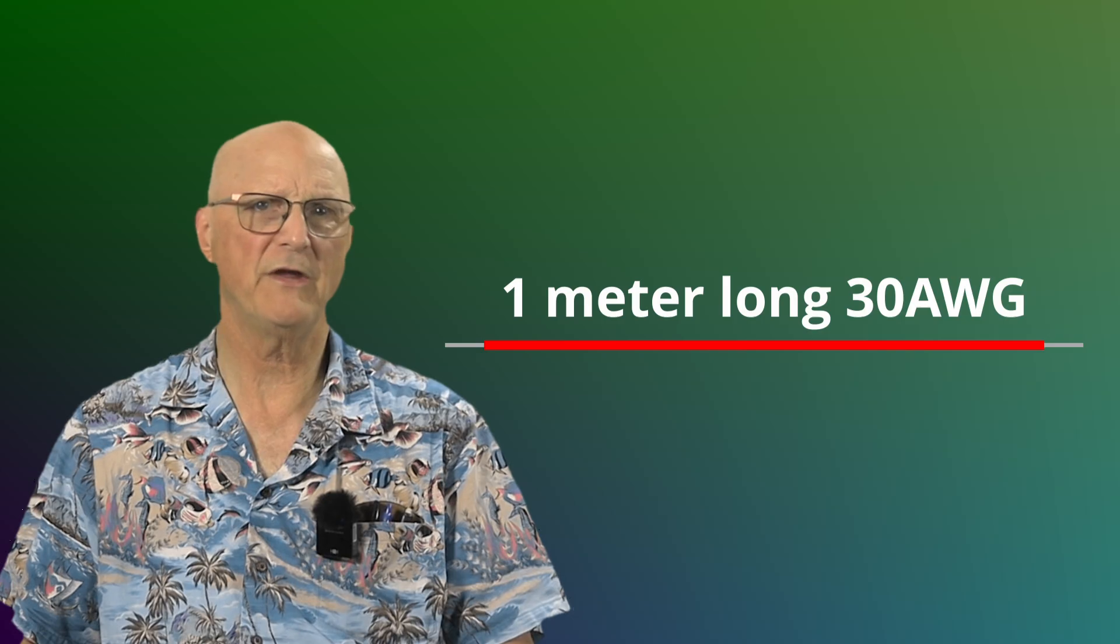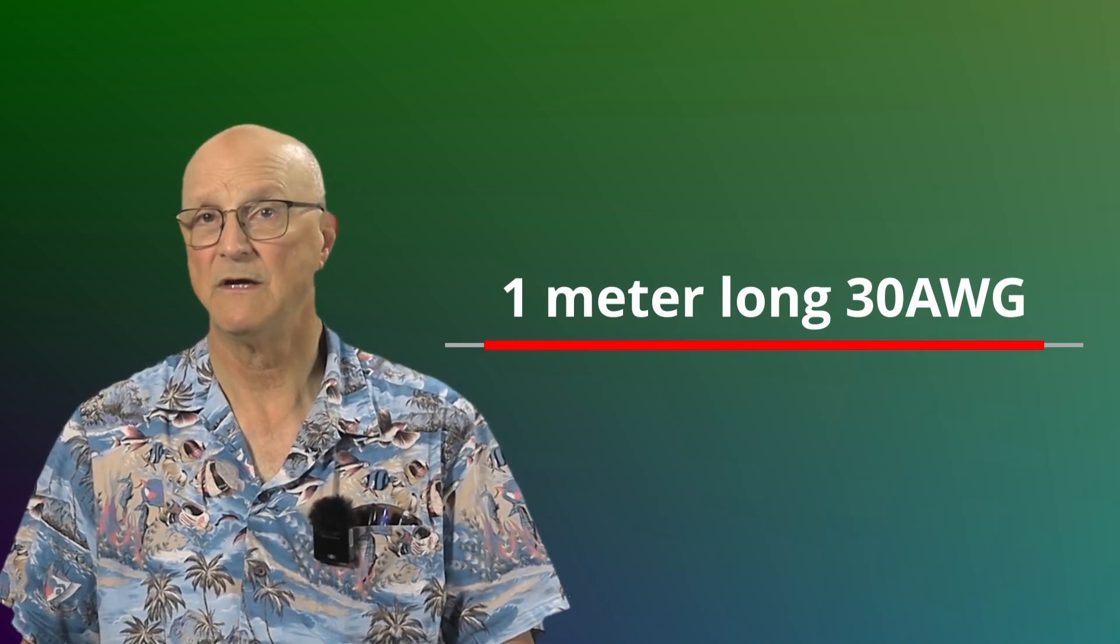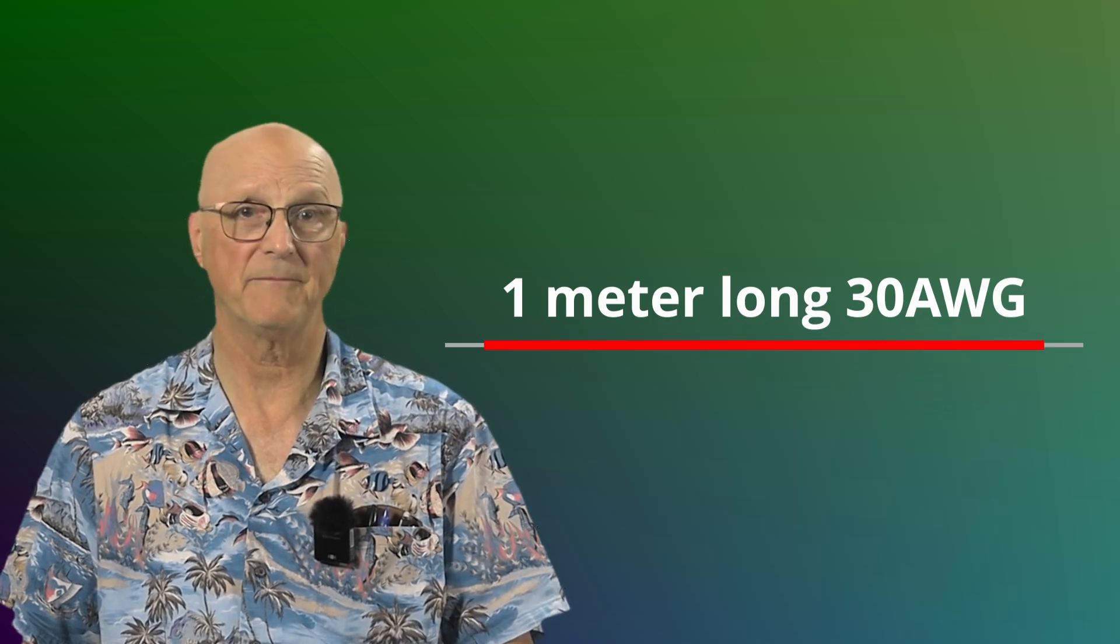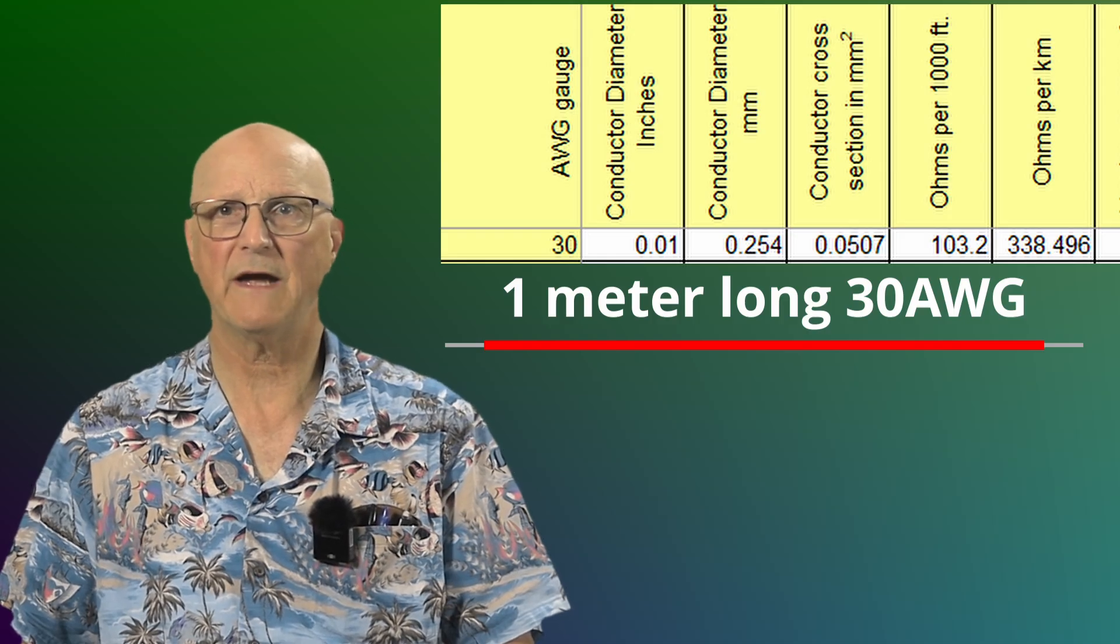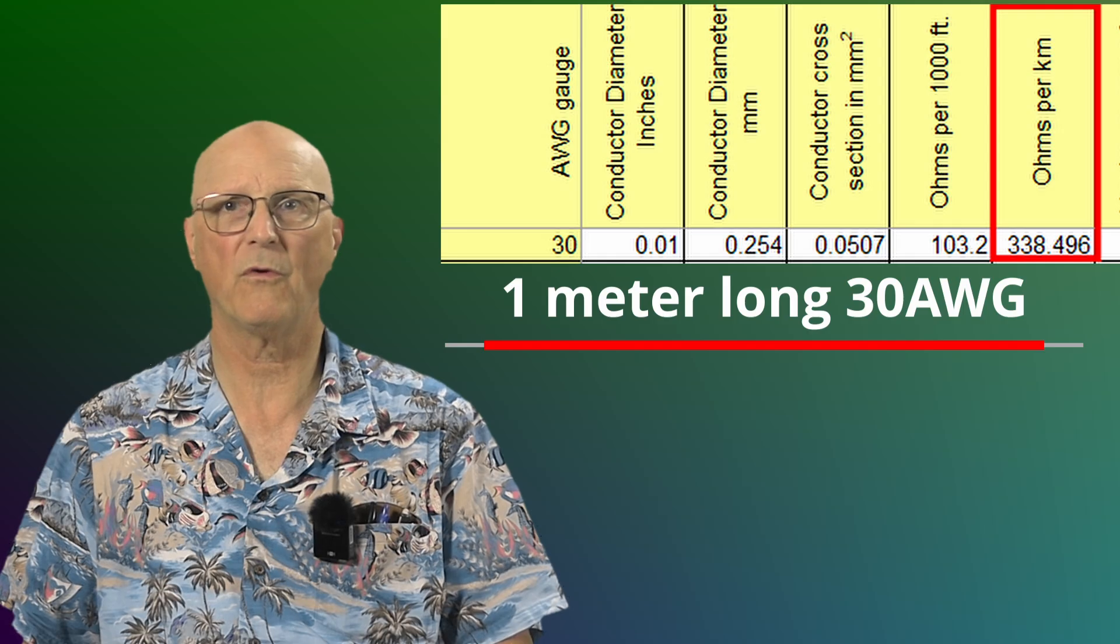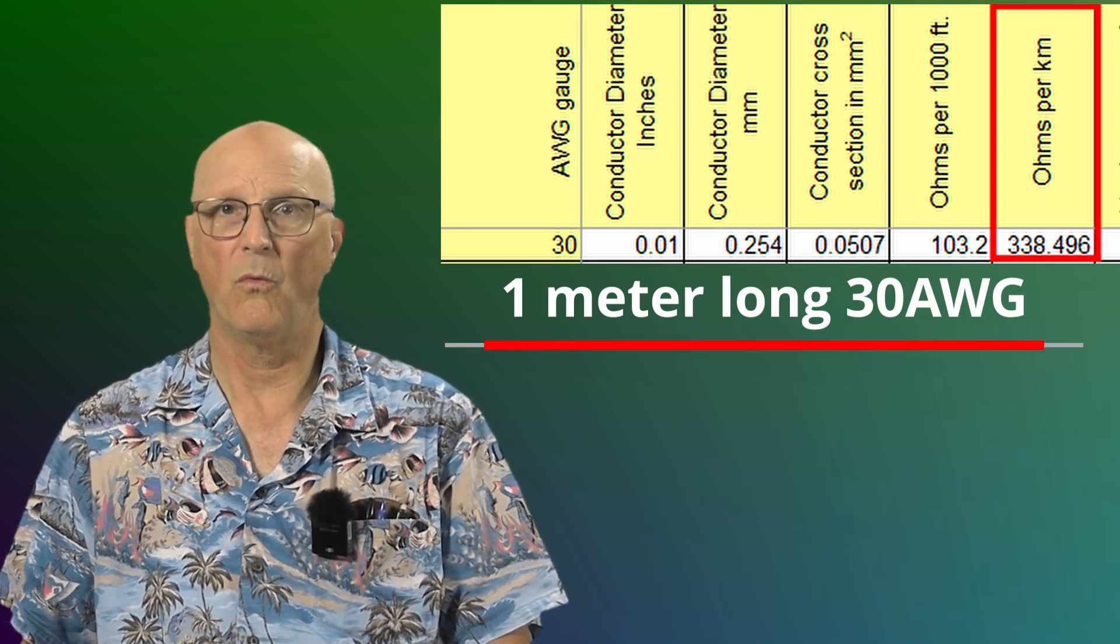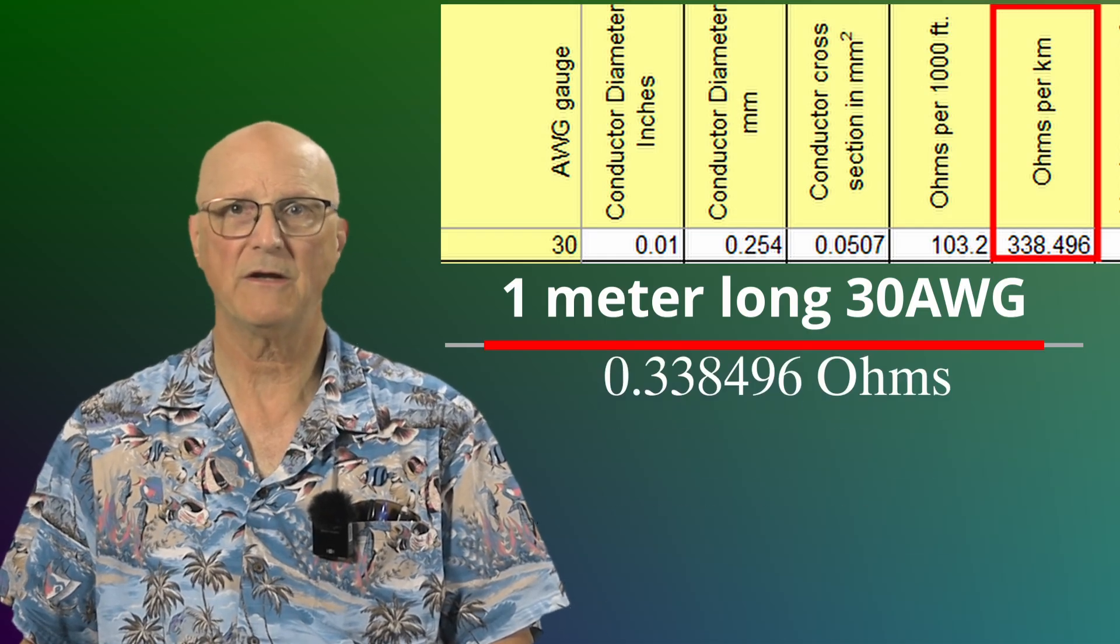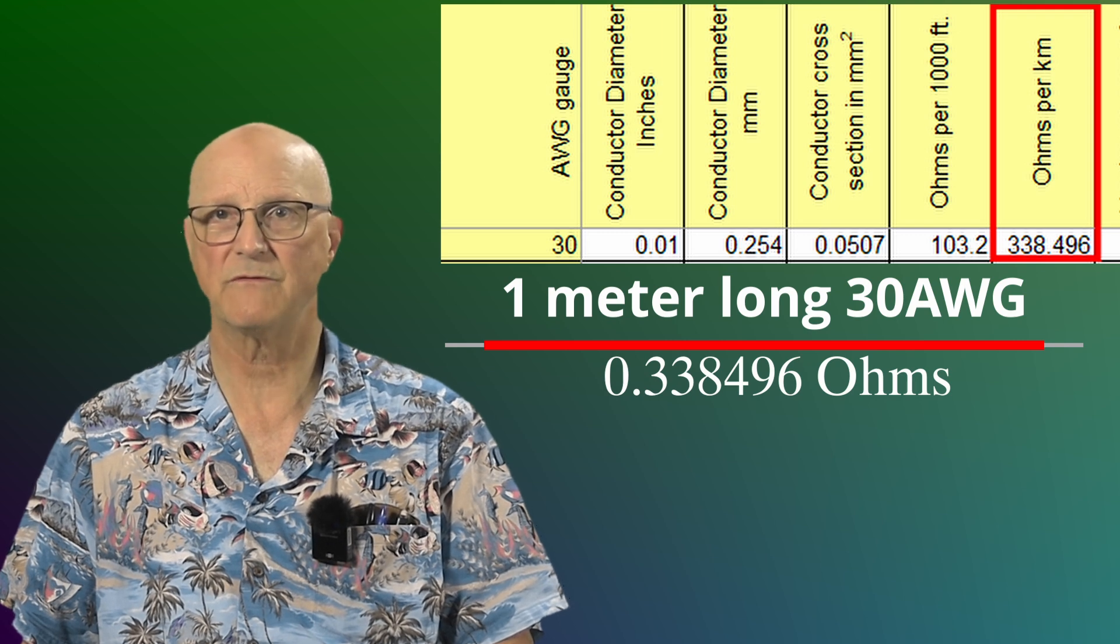With this understanding under our belt, let's think about the one meter long 30 gauge wire just hanging out there by itself with two amps running through it. According to the wire table I have here, a 30 gauge wire has a resistivity of 338.496 ohms per kilometer. Our one meter wire will have 0.338496 ohms of resistance.